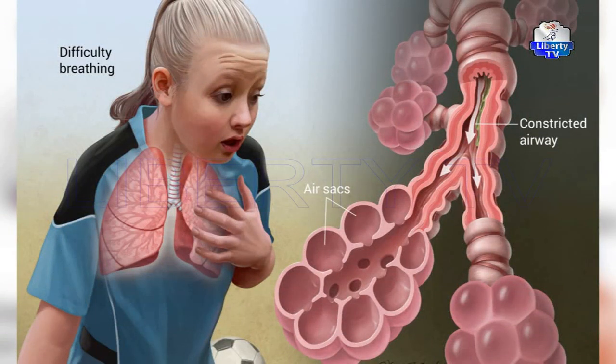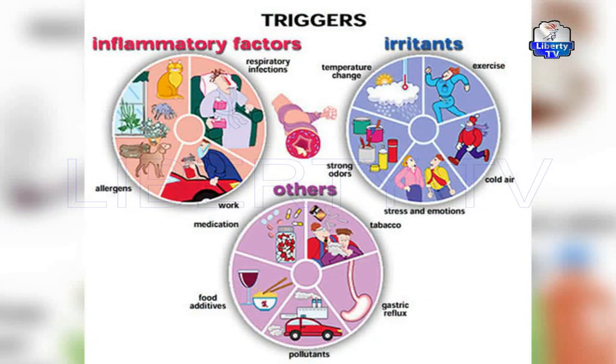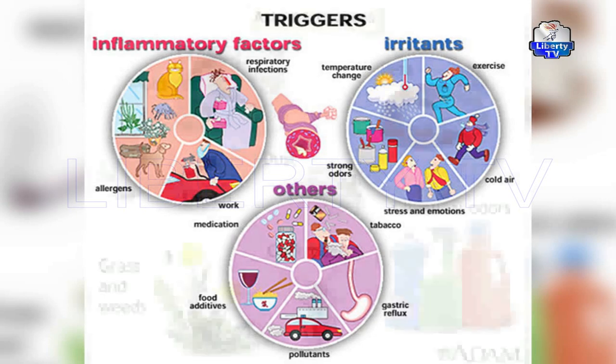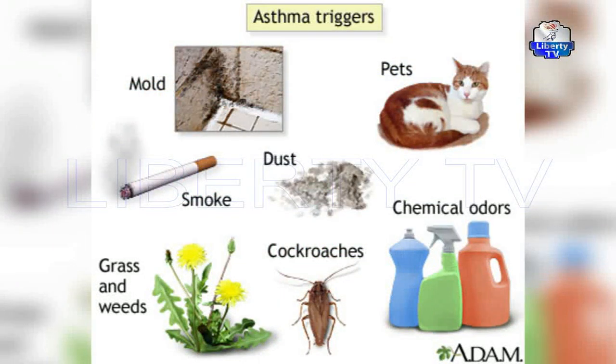If asthma is not properly managed, complications can include pneumothorax — air in the lung spaces — and pneumomediastinum, where air becomes trapped in the mediastinum, the space enclosing the lungs and heart. Asthma can also cause heart attack, severe acute respiratory disease, and even death. Many people have died as a result of asthma.